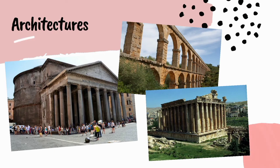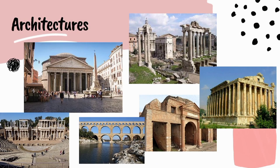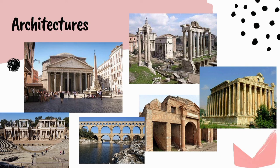Roman architecture reflects the practical character, restless energy, and organizational mindset of its creators. As the Roman Empire expanded to engulf the Mediterranean region and large areas of western Europe, Roman architects aimed to demonstrate the grandeur and power of Rome while improving the lives of citizens. They mastered key techniques including the arch, the dome, the vault, and the use of concrete, enabling them to build great public structures such as temples, basilicas, amphitheaters, triumphal arches, monuments, and public baths.